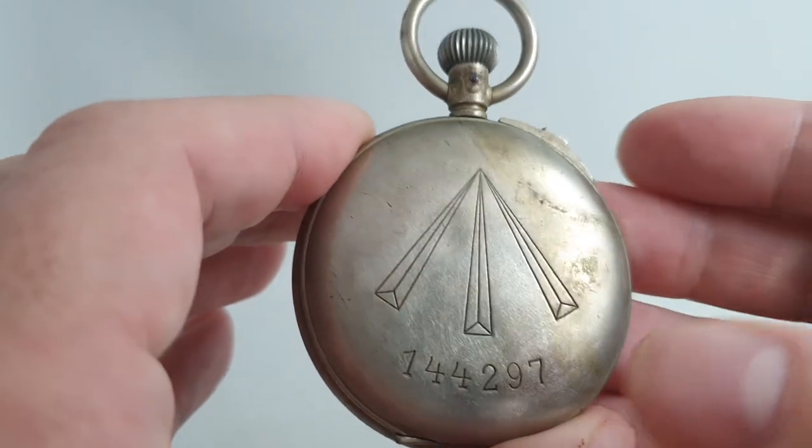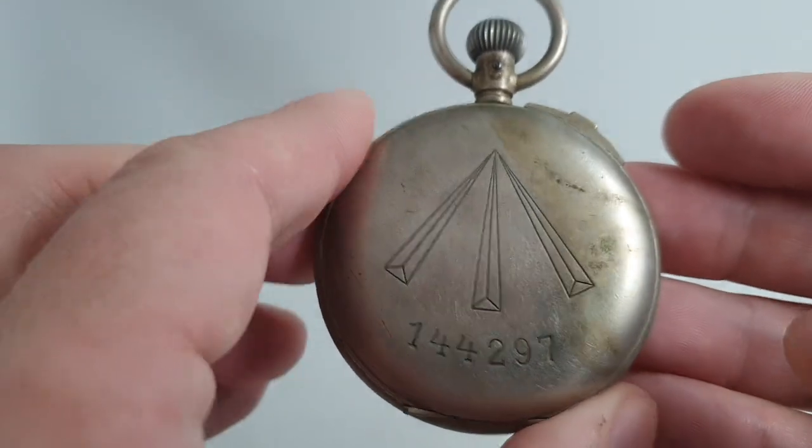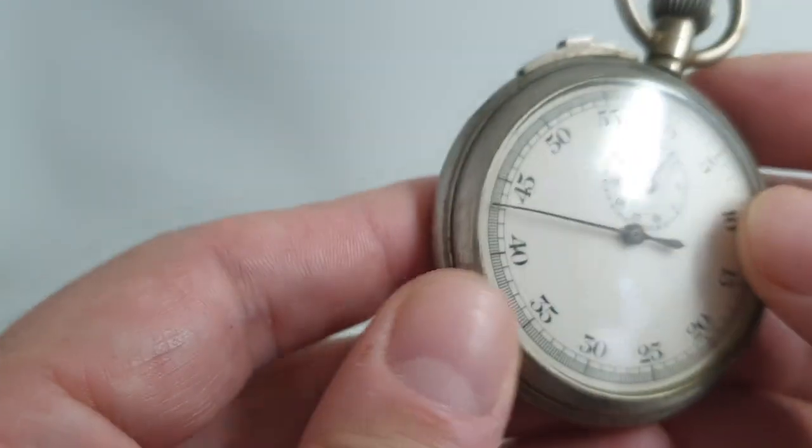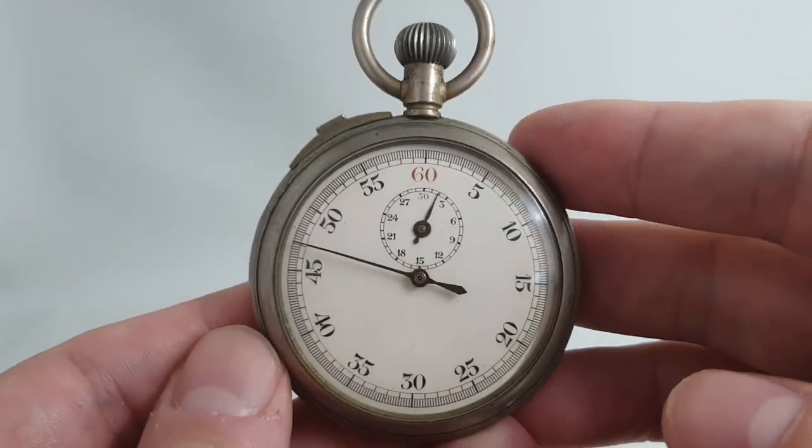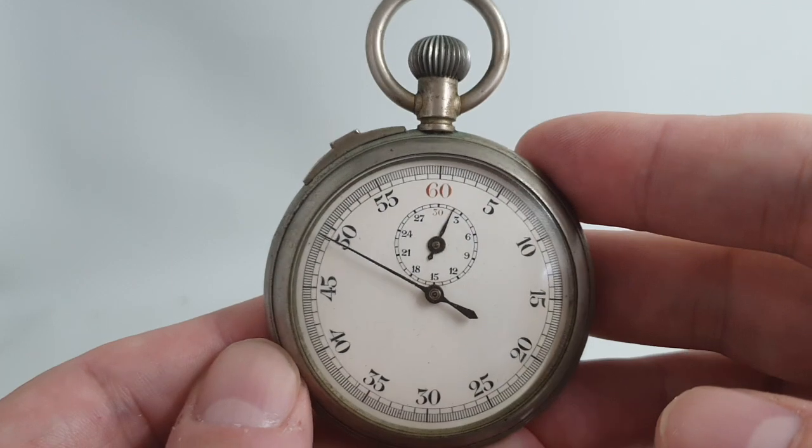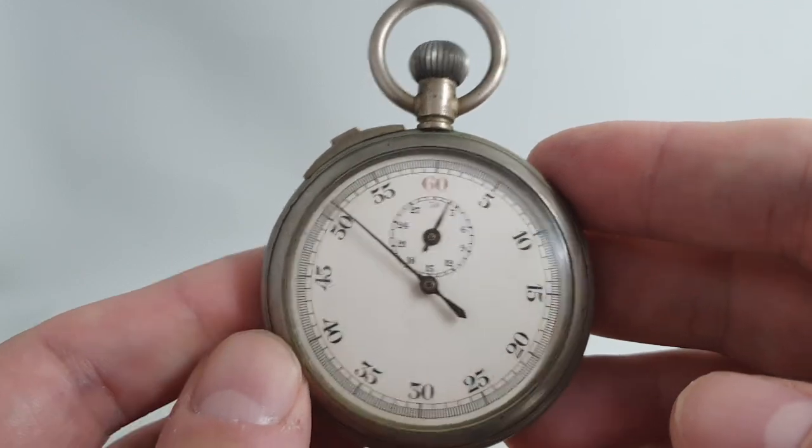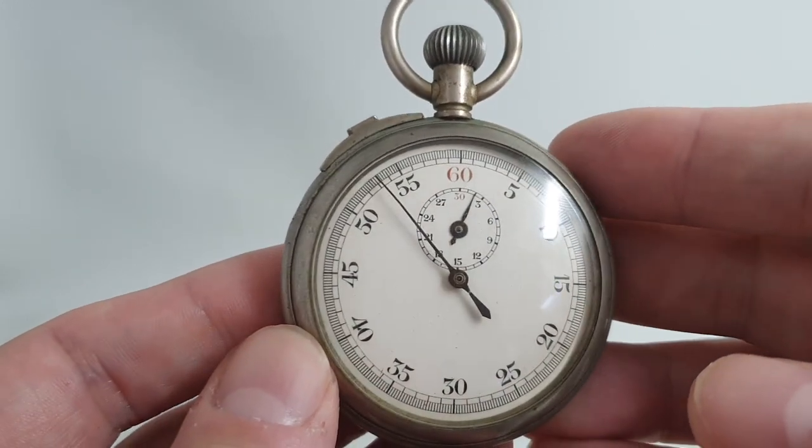This has the large Fion broad arrow on the case back. We haven't been able to identify the maker, although this exact model does feature in the Kearnan book about British military watches. They couldn't identify either.